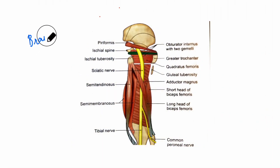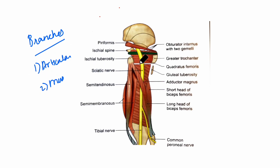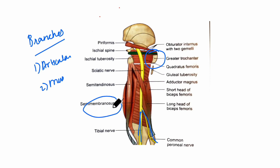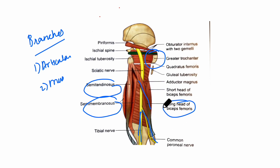The sciatic nerve gives out articular branches and muscular branches. The articular branch goes mainly to the hip joint and arises in the gluteal region. The muscular branches include the tibial part and the common peroneal part. The tibial part supplies the semimembranosus, the semitendinosus, the long head of the biceps femoris, and the ischial head of the adductor magnus from its medial side.